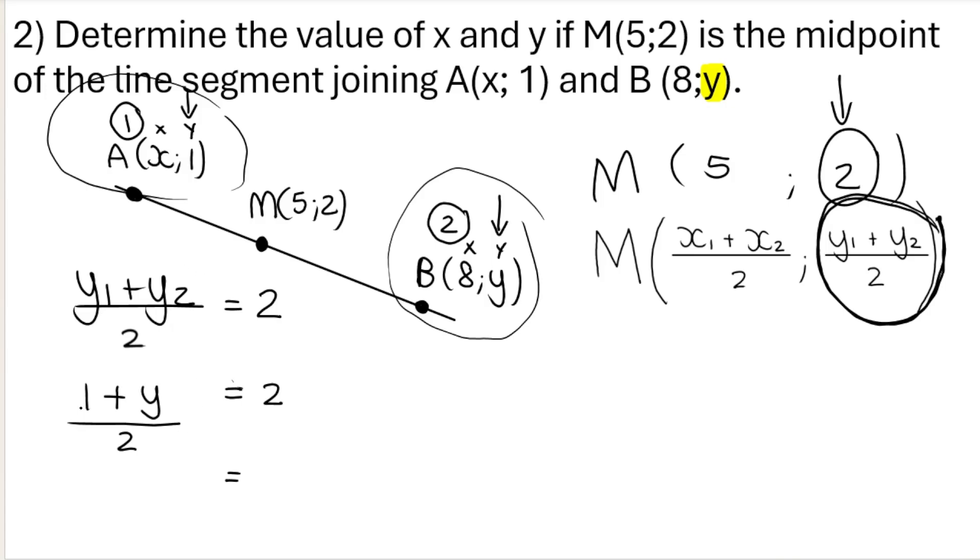Now we need to do inverse operations. Inverse of divide by 2 is times by 2, so we're going to have 2 times 2 on this side of the equation which is 4. Then over here we are adding 1, inverse operation of adding 1 is subtracting 1 from both sides. So 4 minus 1 is 3. So therefore, B, B was originally listed as 8 and y, now we therefore know that B is 8 and 3.